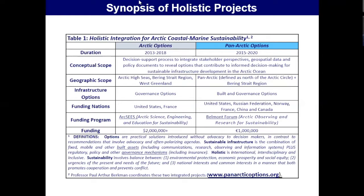The geographic scope of these two projects involves the Arctic region, with the Pan-Arctic Options Project also including the Bering Strait Region. Infrastructure options relate to types of decisions that can be made: governance options such as regulatory devices, policy statements, treaties, conventions, and various agreements; and things that can be built — mobile assets, fixed assets, ports, ships, and any system requiring capitalization plus technology, including communication systems, research systems, observing systems, and information systems. The scope is intended to be holistic, defined as international, interdisciplinary, and inclusive.